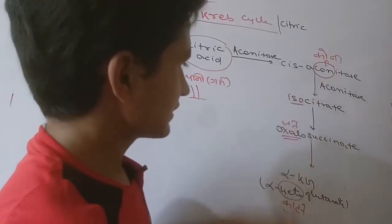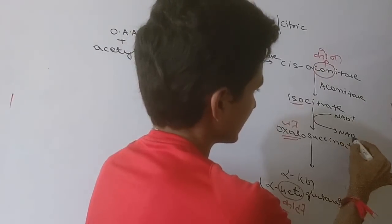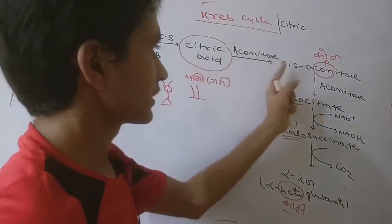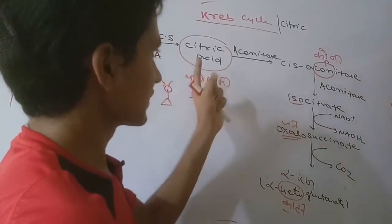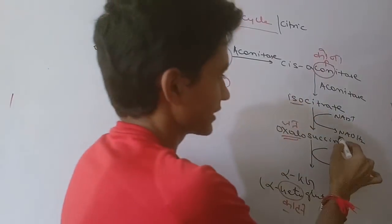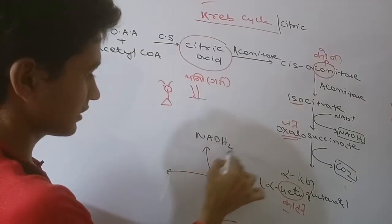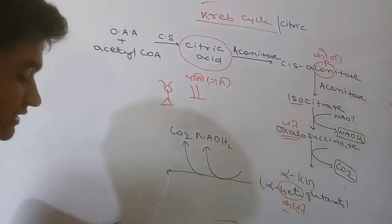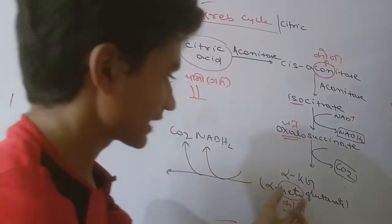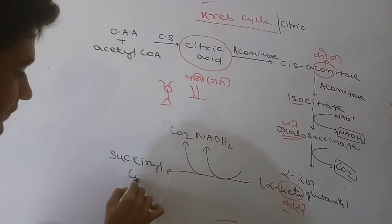Now this step involves isocitrate oxidation, meaning NAD+ is used here. The isocitrate dehydrogenase enzyme acts, and NAD+ is converted to NADH. CO2 is also released. The next step: alpha-ketoglutarate is produced. So from isocitrate, alpha-ketoglutarate is formed, with NAD+ conversion and CO2 release.